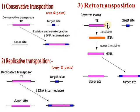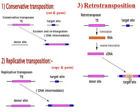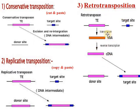The third type is retro transposition. In retro transposition, the transposable element undergoes transcription to produce RNA. Then, with the help of reverse transcriptase enzyme, this RNA is converted to a DNA copy, and this DNA copy is finally inserted into the target site. The donor side remains unchanged because copies are made, so we call it retro transposition.